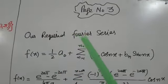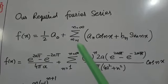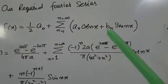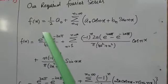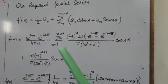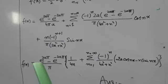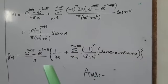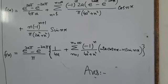Now our required Fourier series formula: f(x) equals a₀ over 2 plus summation n equals 1 to infinity of aₙ cos nx plus bₙ sin nx. We substitute the values of a₀, then aₙ, then bₙ. We can take e to the 2aπ minus e to the minus 2aπ common. This is our required Fourier series, the answer to a very important question.